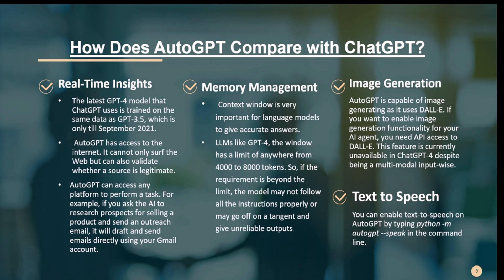On image generation: Auto-GPT can generate images using the DALL-E API. To enable this, you need API access to DALL-E — a feature currently unavailable in ChatGPT-4 despite it being a multi-modal input model. On text-to-speech: you can enable text-to-speech in Auto-GPT by typing 'python -m autogpt speak' in the command line, though you must enter the command each time. You can also connect Auto-GPT to ElevenLabs to clone your own voice, though that's optional and won't be covered in this lecture.